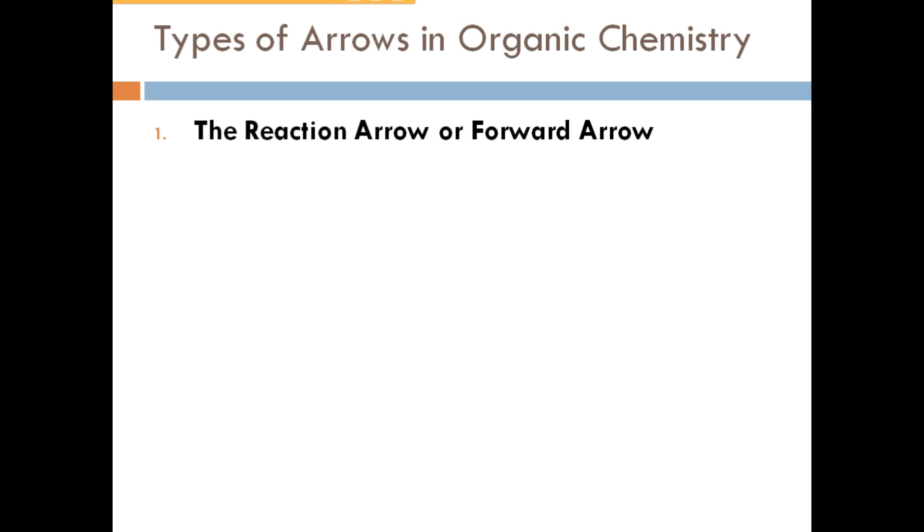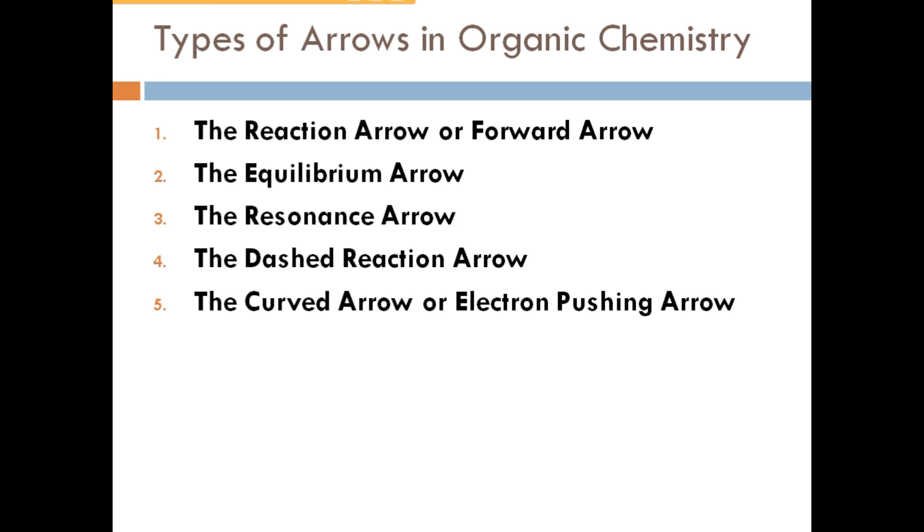The first one is the reaction arrow or forward arrow. The second is equilibrium arrow. The third is resonance arrow. The fourth is dashed reaction arrow. The fifth is curved arrow or electron pushing arrow. The sixth is retrosynthetic arrow. And the seventh is broken arrow.